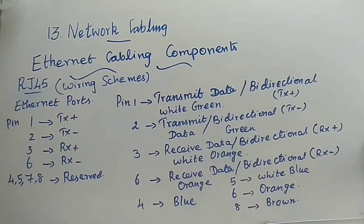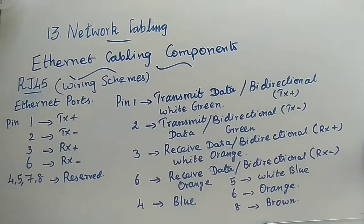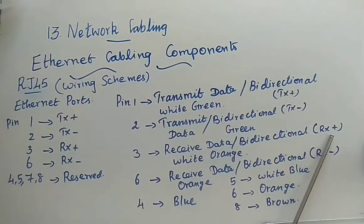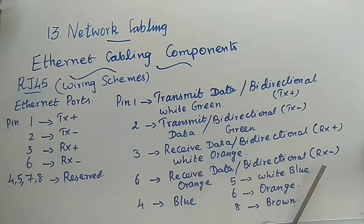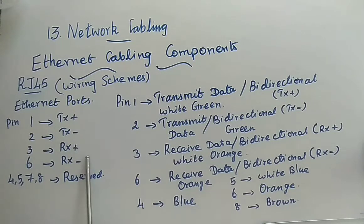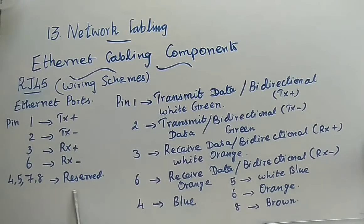Pin 3 is for receiving data and is bi-directional — RX positive, meaning receive variant with a positive signal. The color of the wire is white-orange. Pin 6 also receives data and is bi-directional, but it is at the negative side. The color of the wire for pin 6 is orange. That covers the four active pins.